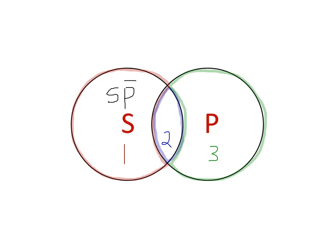So the middle section here, represented by the two, is the overlapping, so it represents both S and P. We have both members of the S and the P class in region two.